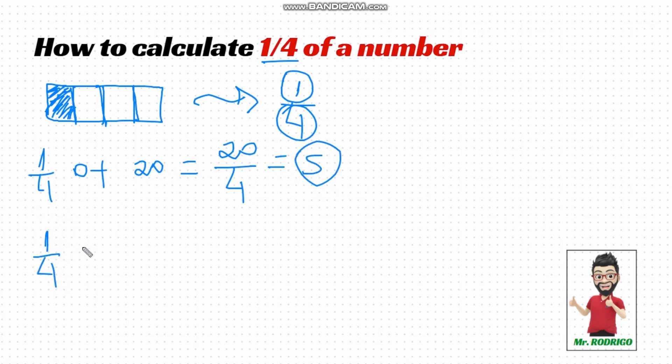What about one quarter of 40? It's simply taking 40 and dividing it by four, splitting it into four equal parts. 40 divided by four equals 10.